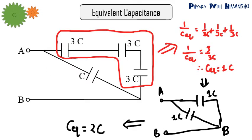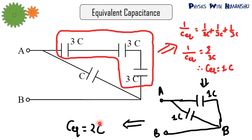In this circuit, 3C, 3C, and 3C are all in series. So 1/C_eq = 1/3C + 1/3C + 1/3C = 3/3C, giving C_eq = C. Now this C and another C are in parallel, so the equivalent capacitance is 2C. The points across both C's are A and B, confirming they are in parallel.